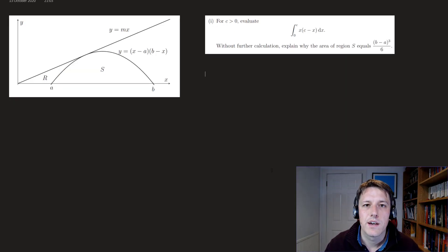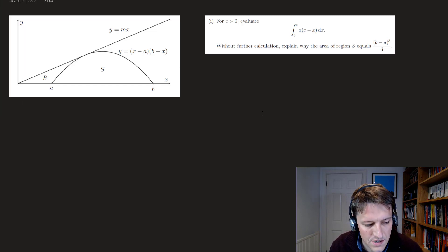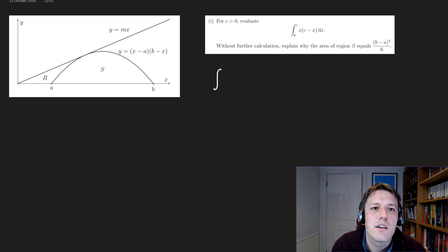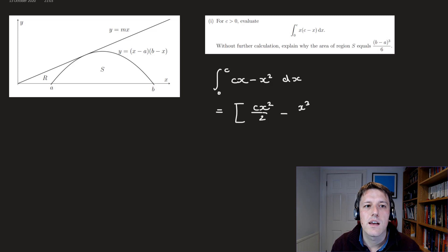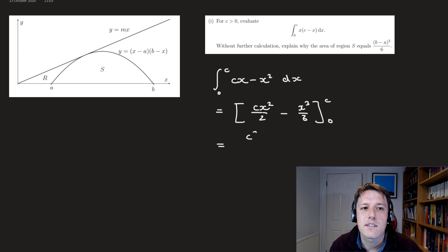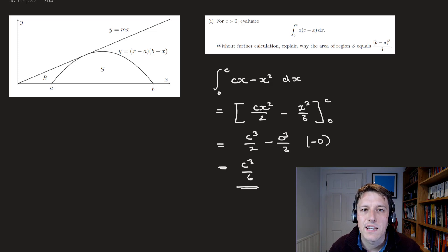As we do this question I'll keep that picture up. In part one it says, for c greater than 0, evaluate the integral between 0 and c of x(c − x). We can just multiply out and get cx minus x squared dx, then integrating term by term we get cx²/2 minus x³/3 between 0 and c. Plugging those in, we get c³/2 minus c³/3, which gives c³/6.